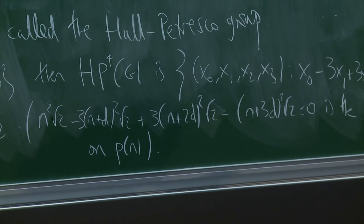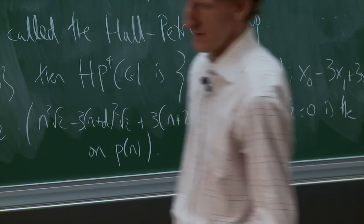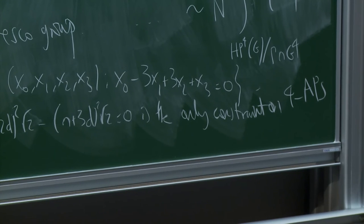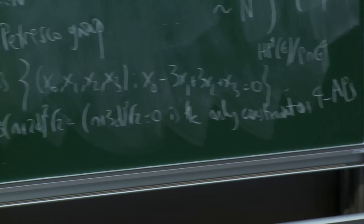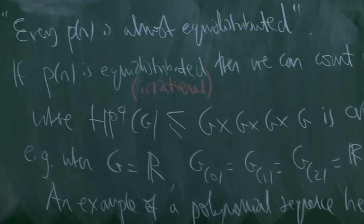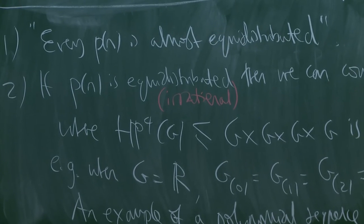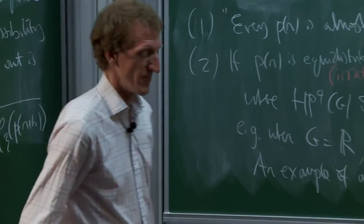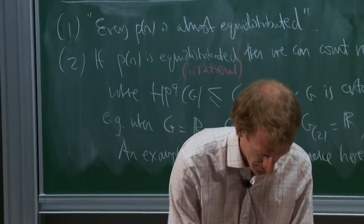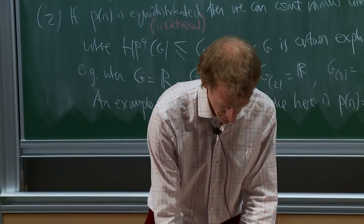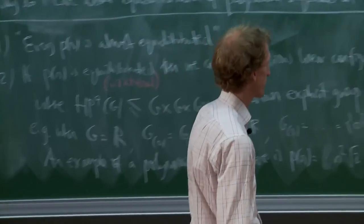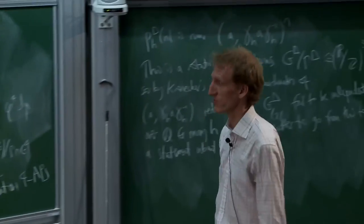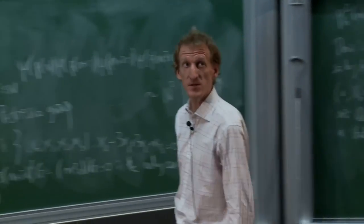These equidistributed sequences are very nice. Actually, I lied slightly — that's not quite right. You actually need a slightly stronger notion of equidistributed called 'irrational'. It's quite technical, and I don't feel inclined to say what it is here. In many cases, for example for linear sequences on the Heisenberg group, the two notions coincide.